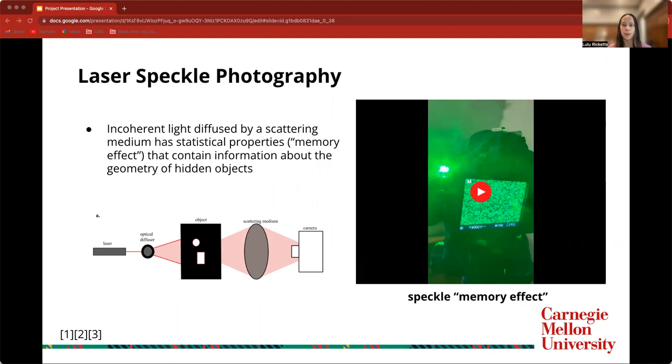The statistical property that's leveraged in this project is called the memory effect, which states that nearby points on an object are scattered by the scattering medium to produce highly correlated shifted random speckle patterns on the camera. This means that any minuscule shifts of the laser's angle towards the camera will result in shifted versions of the speckle pattern.